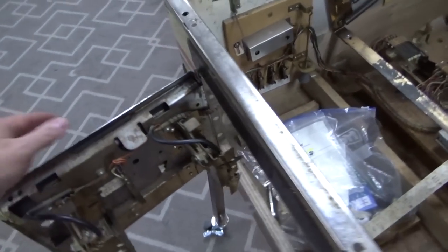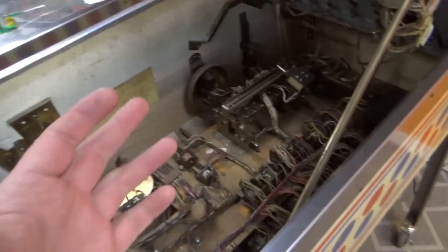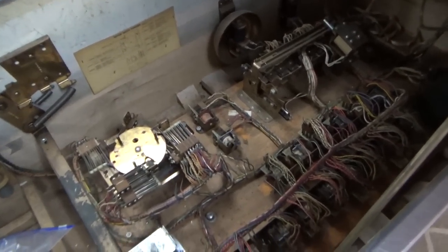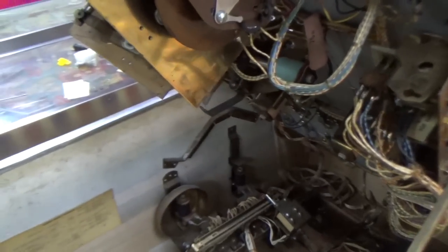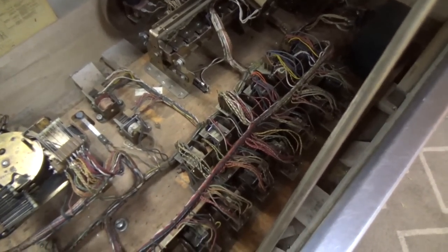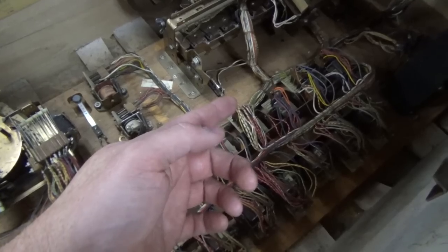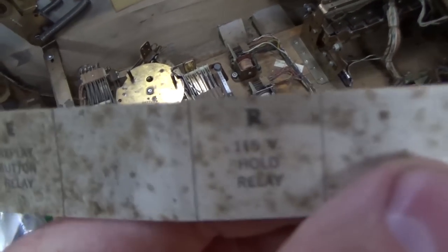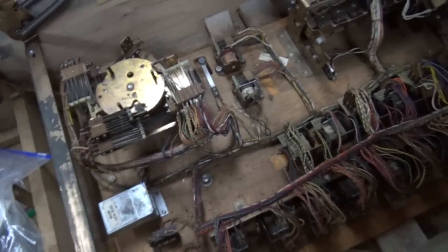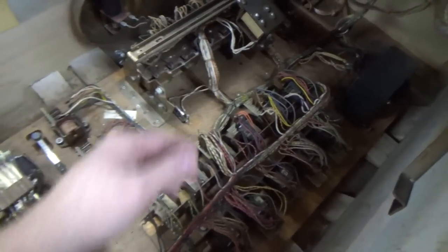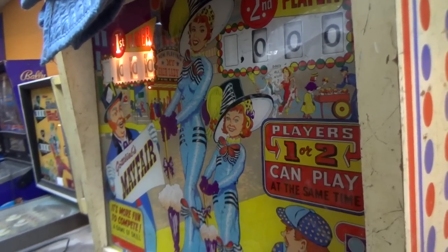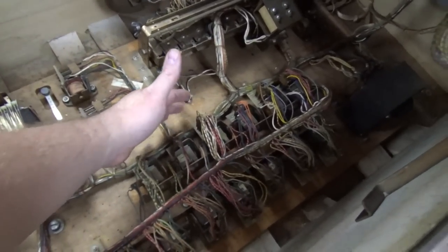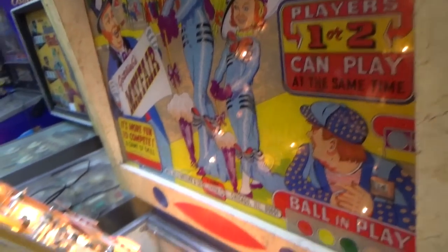It won't start when you hit the start button. Nothing's going on. I don't have the schematics yet, so I'm not sure if this left flipper on a Gottlieb will turn on the lights. We're getting no lights on the playfield. If I hold in the 115 volt hold relay and the 30 volt hold relay, we do get some action, but the score motor constantly turns.